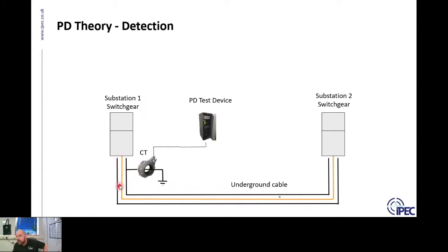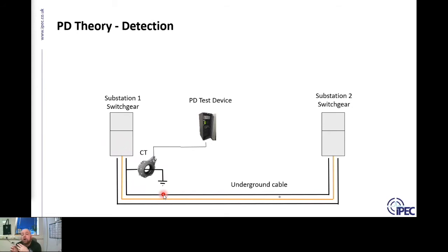On medium voltage networks, the earth may go through an insulated bushing and be terminated inside the switchgear — it's still isolated and will still carry the PD signal. Sometimes we need to take a shutdown of the termination and install the HFCT inside the switchgear termination. Alternatively, we can install the HFCT around the core of the cable. The PD signal travels along both the earth sheath and the core, and the core can actually provide a much cleaner signal, though it may be more difficult to install the sensor there.